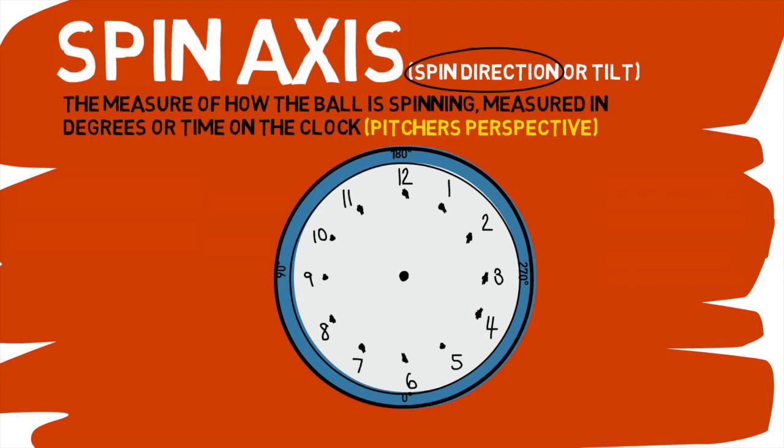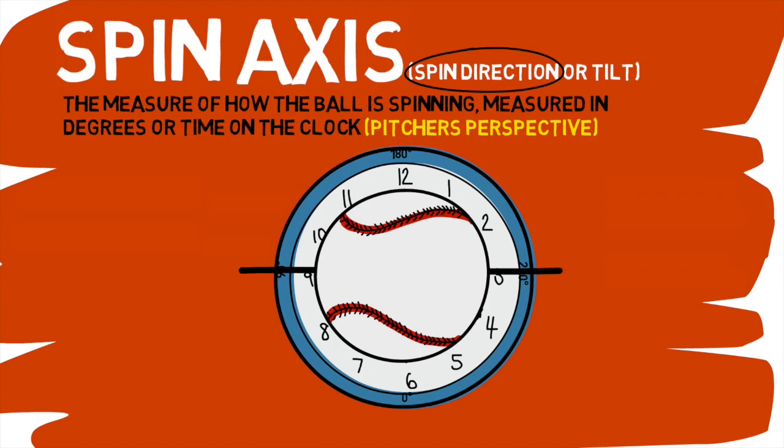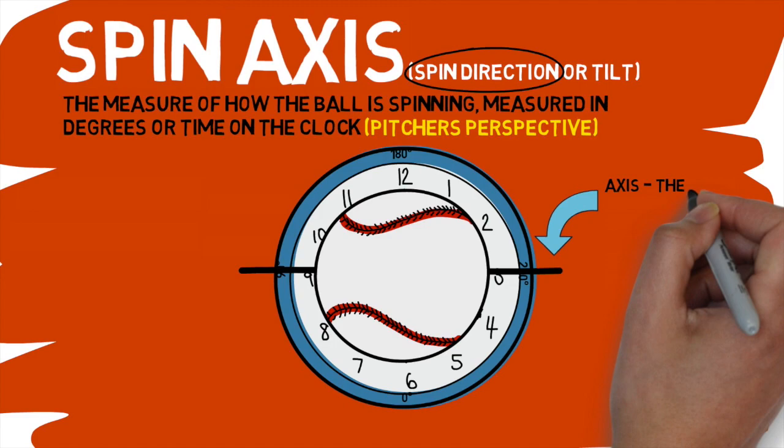When you're looking at spin axis, you can choose to look at one of two things: degrees or time. In the end, this really comes down to personal preference. I believe that it's easier to understand if you're looking at it as time on a clock.